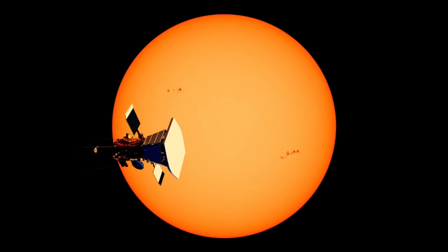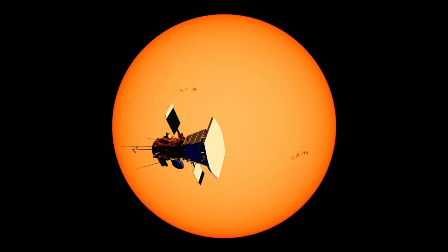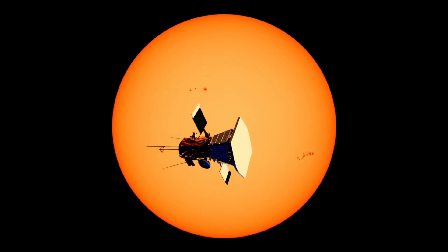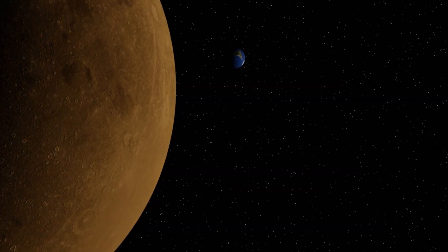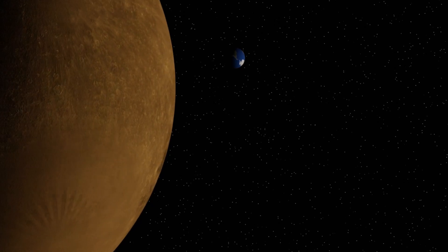To put this into perspective, if Betelgeuse were to take the place of our sun, its vast surface would stretch out beyond the orbit of Mars, engulfing Mercury, Venus, Earth, and even Mars itself.